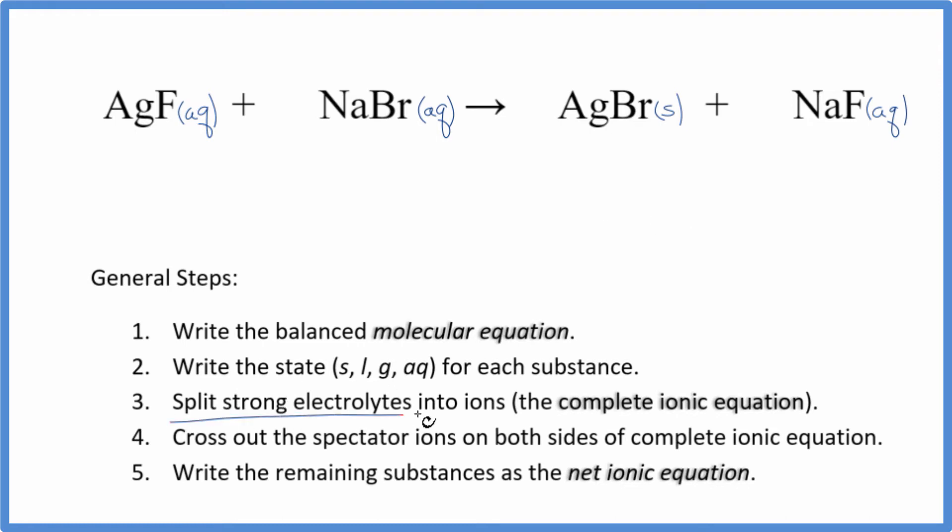We can split the strong electrolytes into their ions and that'll give us the complete ionic equation. Silver always has a 1+ ionic charge. The fluoride ion, 1-. So we have Ag+. I won't write the states now, write those at the end. Plus we have the fluoride ion, F-.